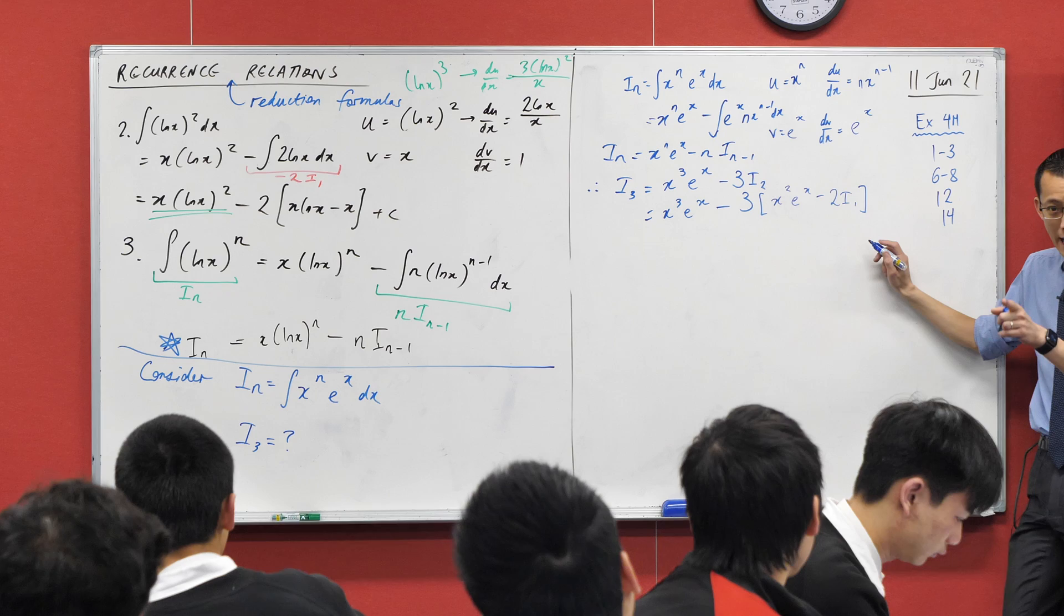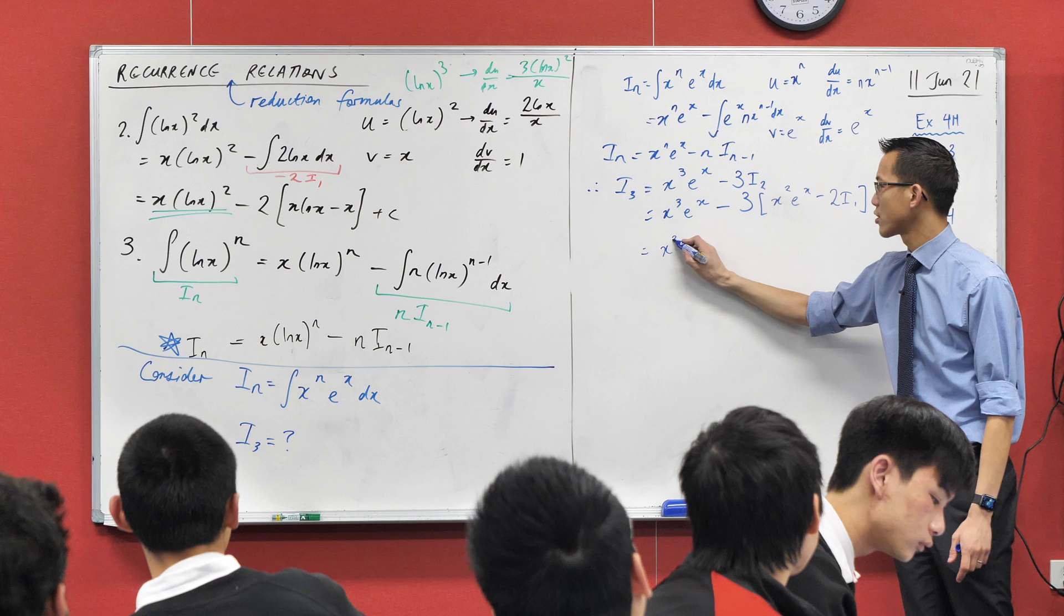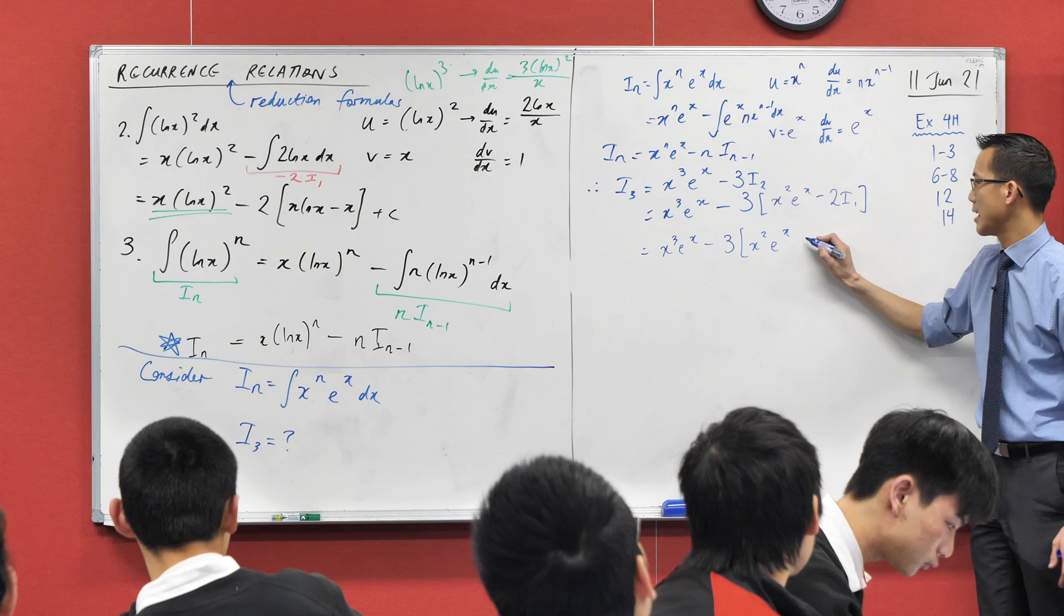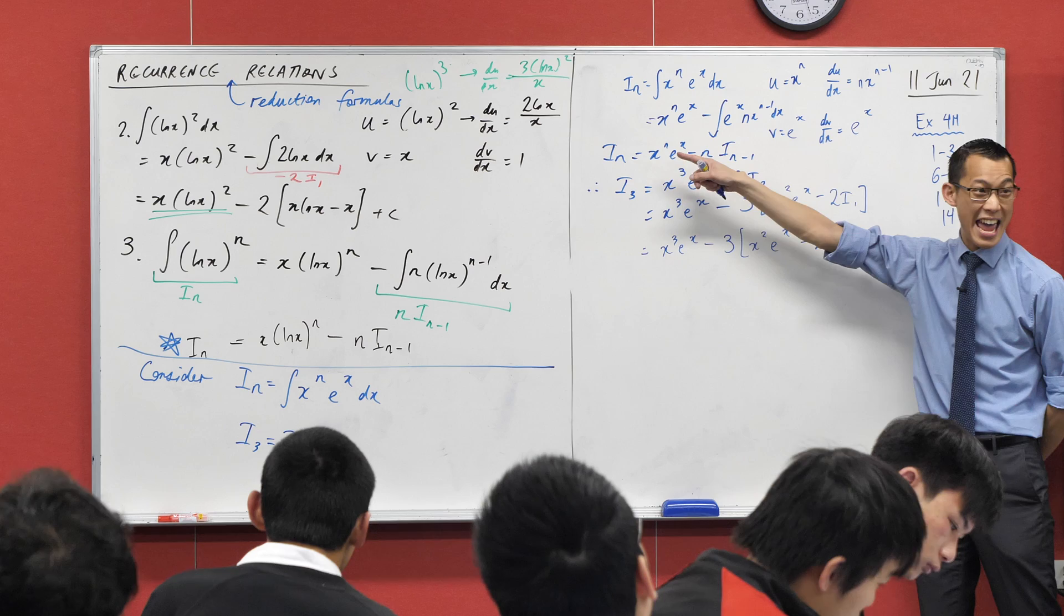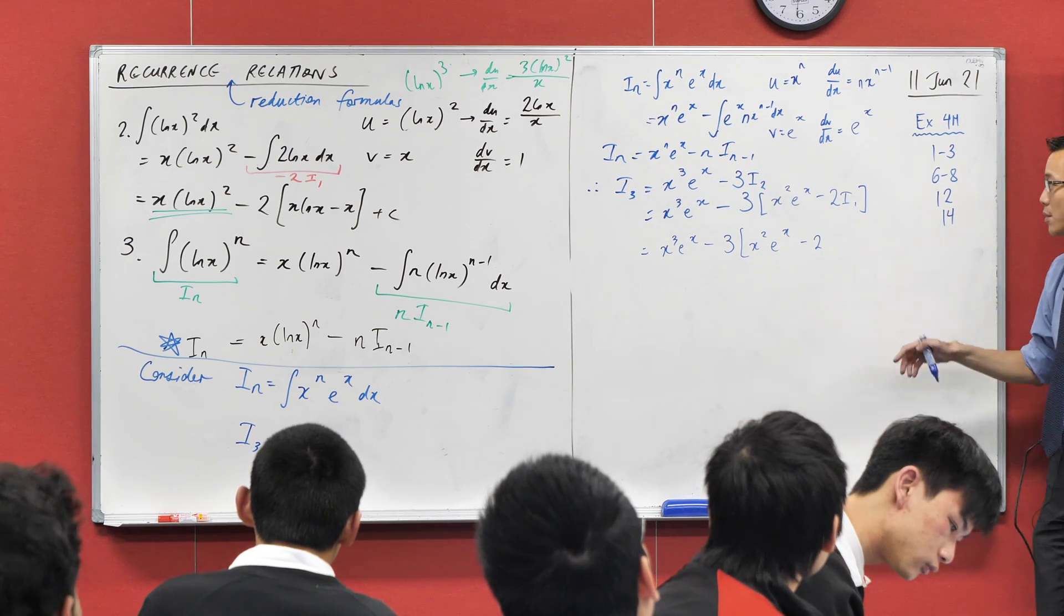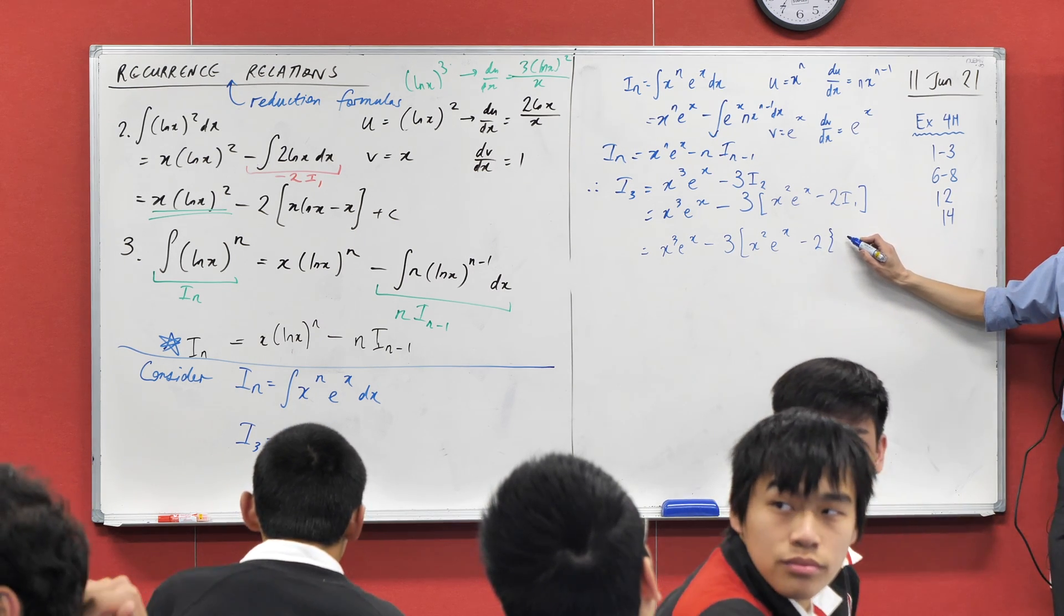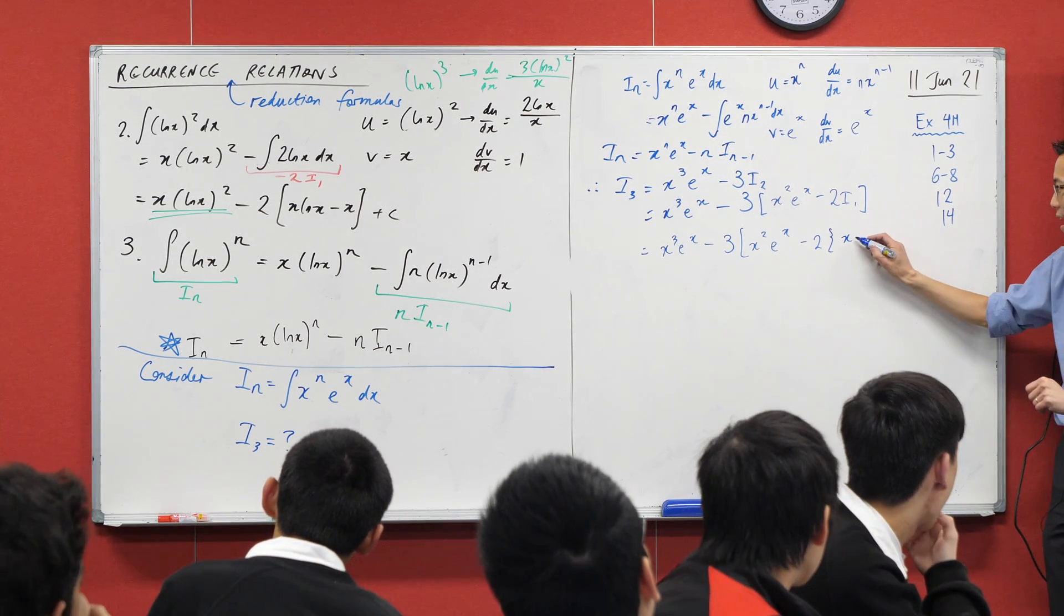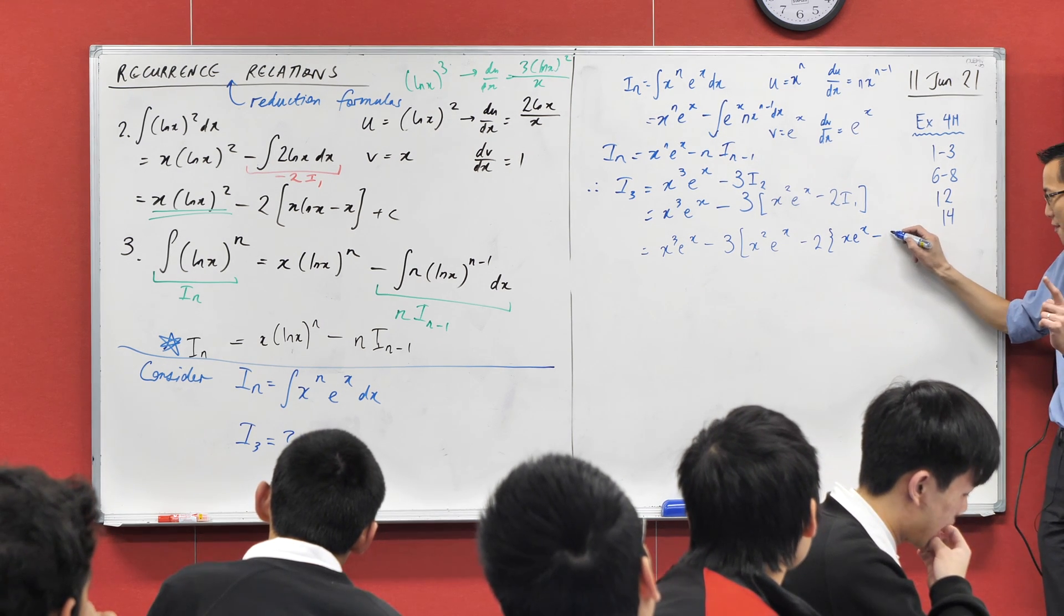Because I have a definition for what i2 is, I just have to substitute in 2. So I get x cubed e to the x, that's just hanging out the front, minus 3 lots of, and then once more, with feeling. I'm going to go x squared e to the x, minus 2 lots of i1. Do I know what i1 is? Yes. Now, I could work out i1, but just for the sake of it, just see how far we can take this.